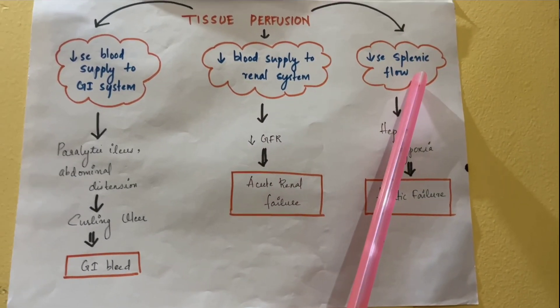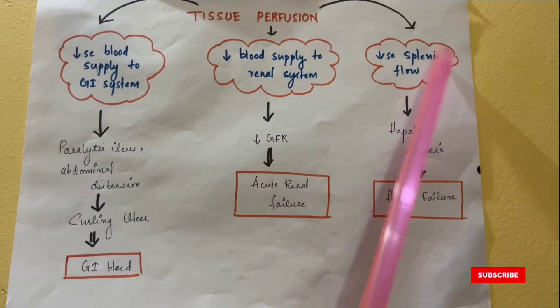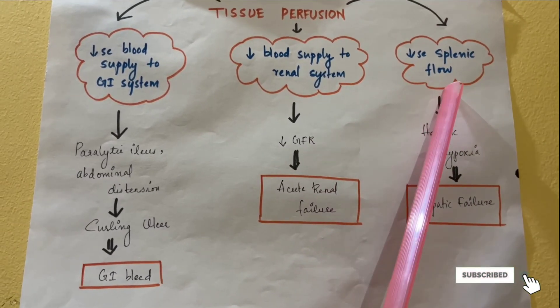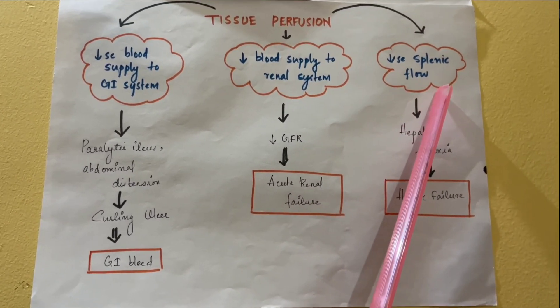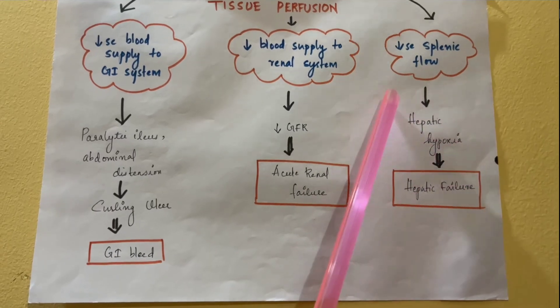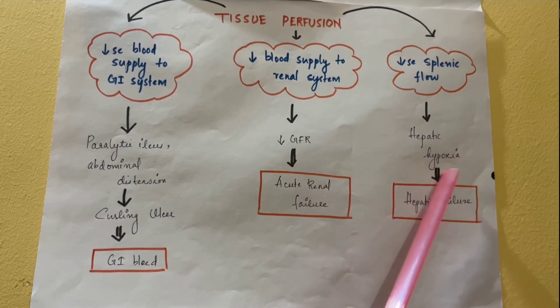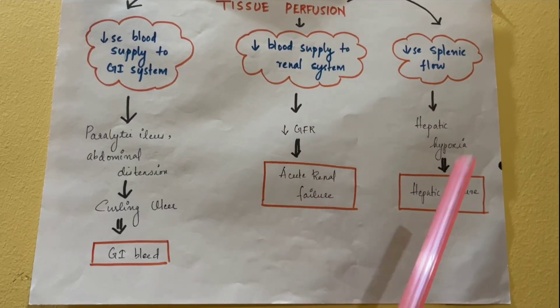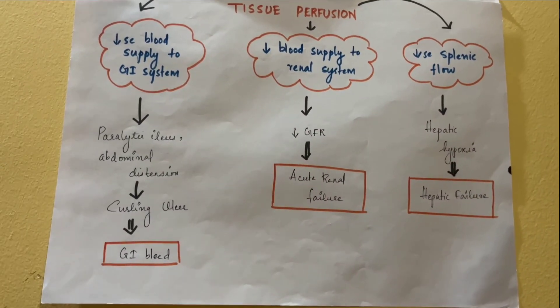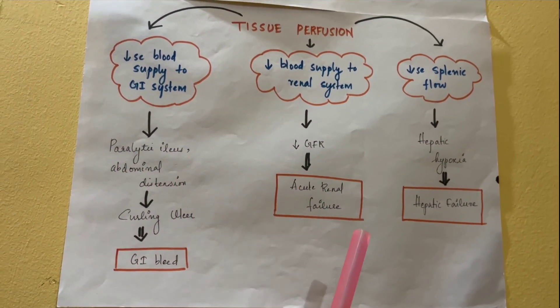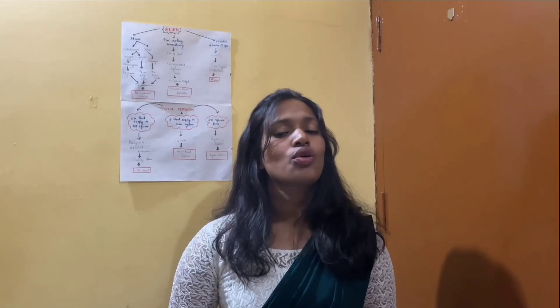Reduced splenic and hepatic blood flow leads to hepatic hypoxia and eventually hepatic failure. So that is all about the pathophysiology of burns. In the coming video, we will be discussing the management of burns, specifically fluid calculation — how to calculate fluid for burn patients. Stay tuned, thank you.